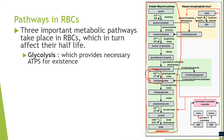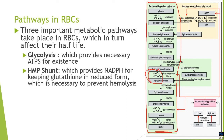The second important pathway which takes place in RBCs is the HMP shunt, also called the hexose monophosphate shunt. Its primary function in the RBC is to provide NADPH, which is a reducing equivalent used to keep glutathione in its reduced form.